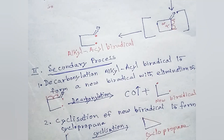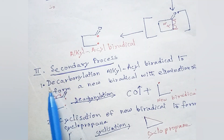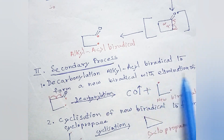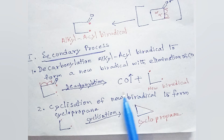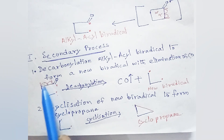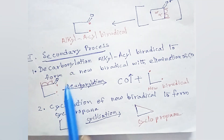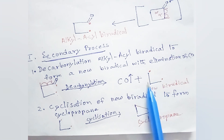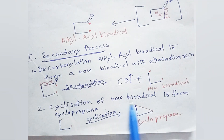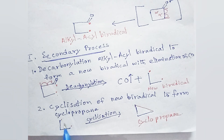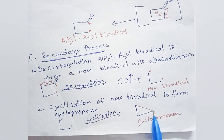In the secondary process, decarbonylation of the alkyl-acyl biradical occurs to form a new biradical with the elimination of carbon monoxide. This new biradical then undergoes cyclization: the two radical ends combine to form a new bond, giving cyclopropane.